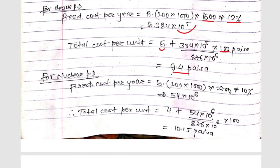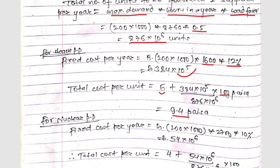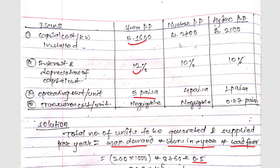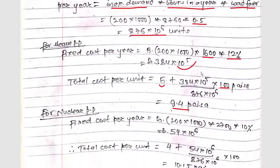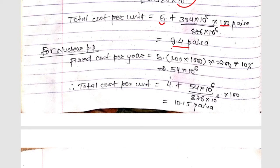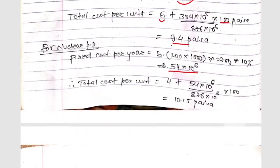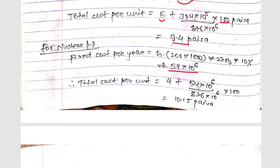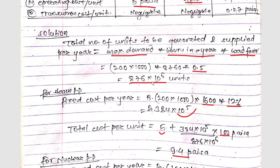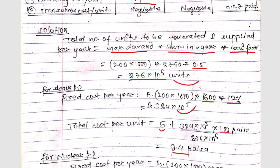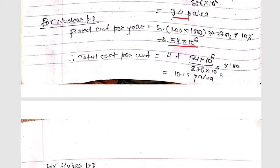For the nuclear power plant, the fixed cost per year is: 200×1000 kW × capital cost of 2700 rupees/kW × interest and depreciation of 10% = 54×10⁶ rupees. The total cost per unit is operating cost of 4 paisa plus fixed cost converted to paisa: (54×10⁶ × 100) / (876×10⁶) = 10.15 paisa per unit.